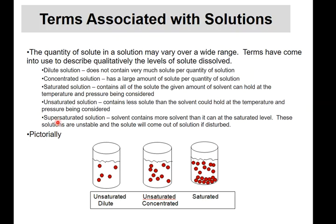There's one interesting special case: a supersaturated solution. For example, you can take something like ammonium acetate, put it in water, heat it up, and dissolve a large amount at higher temperature. If you then cool it down carefully, it doesn't come out of solution easily, so it holds more solute at room temperature than it should stably hold. This is how hot packs and cold packs work — when the solute suddenly comes out at that lower temperature, you get heating or cooling.